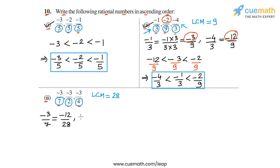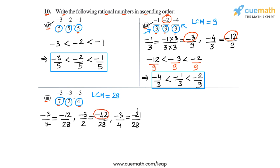Then minus 3 by 2, multiplied above and below by 14, gives us minus 42 by 28. And minus 3 by 4, multiplied above and below by 7, gives us minus 21 by 28. Comparing the numerators of these equivalent fractions, the smallest is minus 42, then minus 21, and then minus 12. So minus 42 by 28 is less than minus 21 by 28 is less than minus 12 by 28.